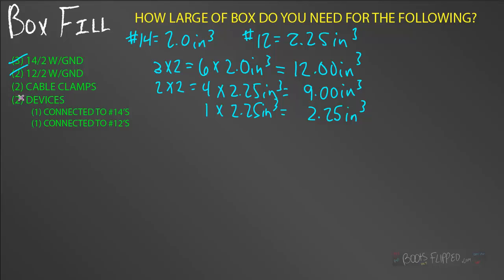Let's move on to cable clamps. Remember, it's just like the ground. All the cable clamps count as one conductor of the largest size. So, let's just duplicate this formula right here. One times two point two five equals two point two five cubic inches. Now, I can cross that one off.